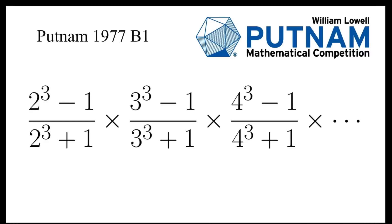In this video, we are going to solve a problem from Putnam 1977: multiply 2 cubed minus 1 over 2 cubed plus 1, times 3 cubed minus 1 over 3 cubed plus 1, times 4 cubed minus 1 over 4 cubed plus 1, and all such fractions up to infinity.